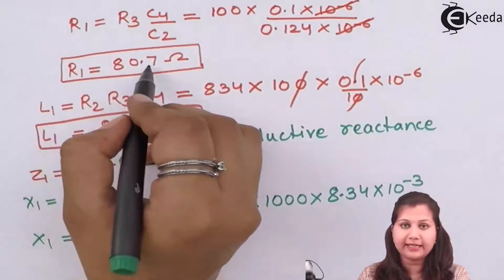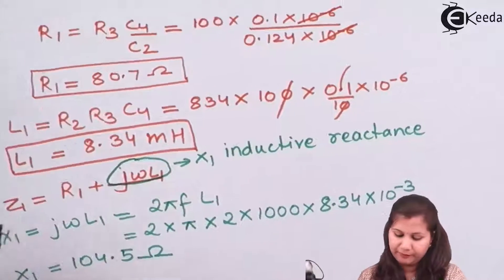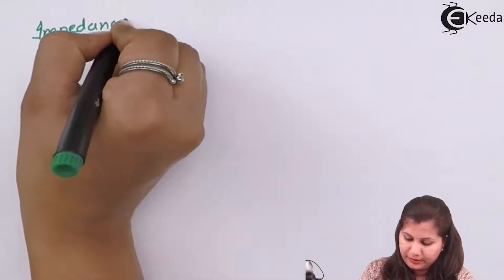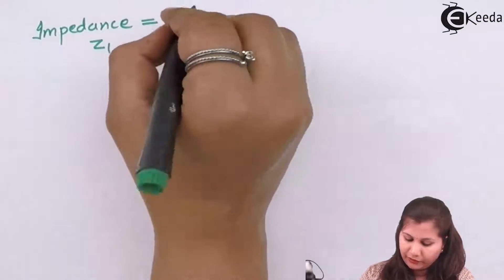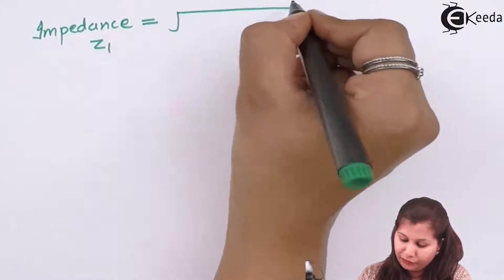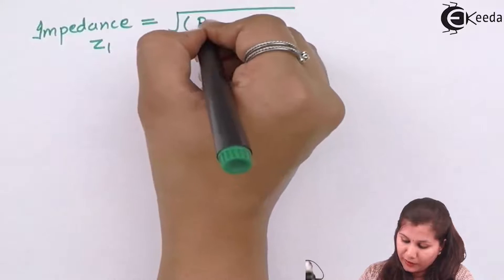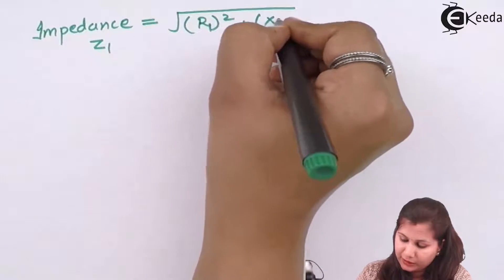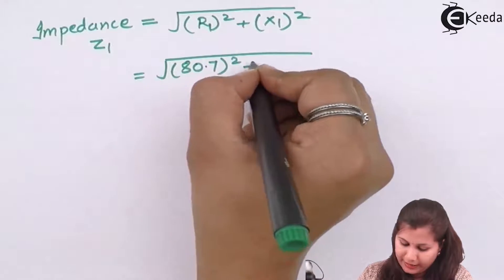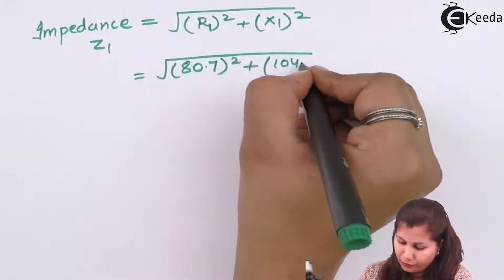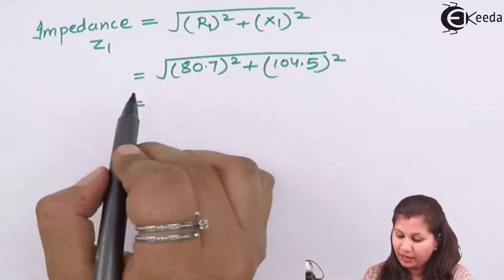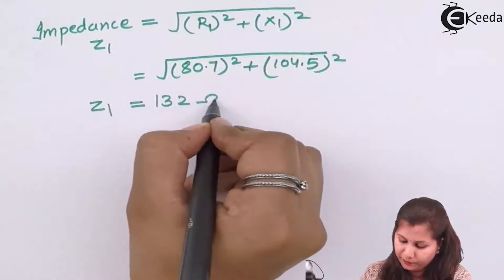R1 is 80.7 ohms. To calculate the effective impedance Z1, we take the magnitude: Z1 = √(R1² + X1²) = √(80.7² + 104.5²). Taking the squares of both terms and then the square root, we get Z1 = 132 ohms.